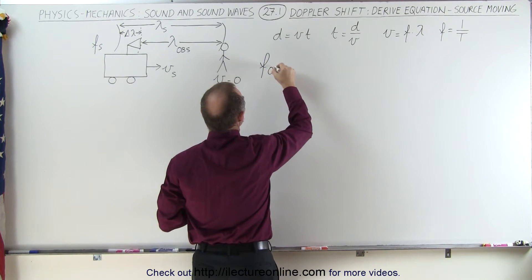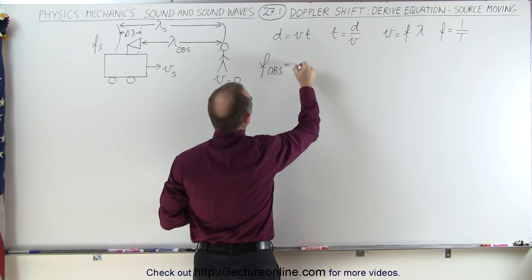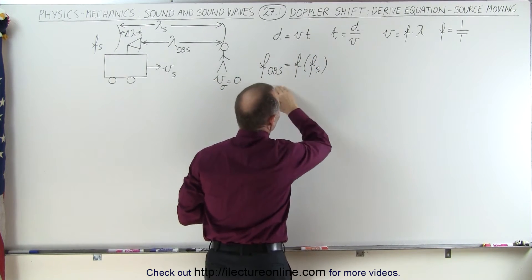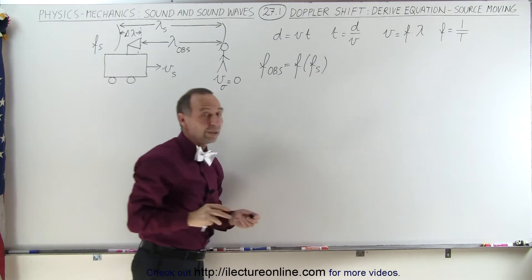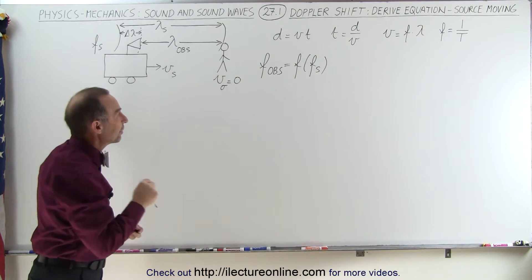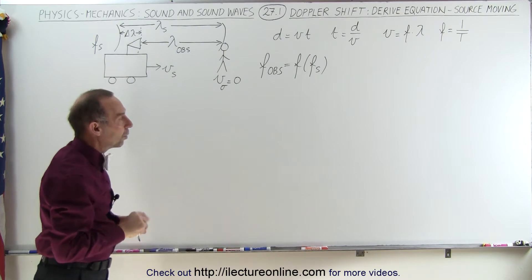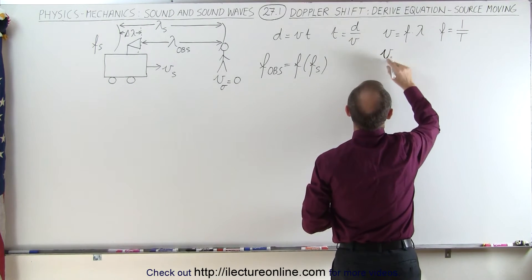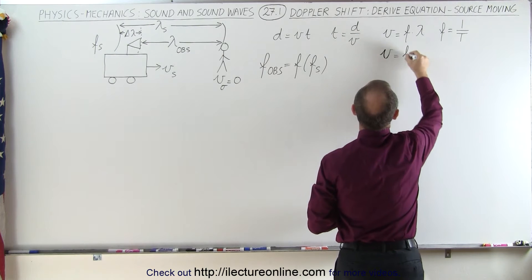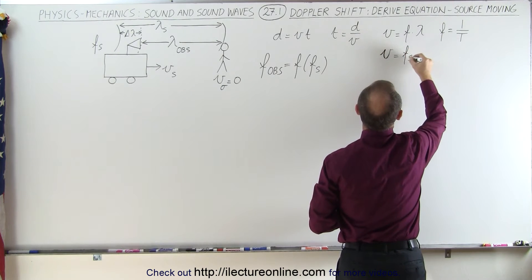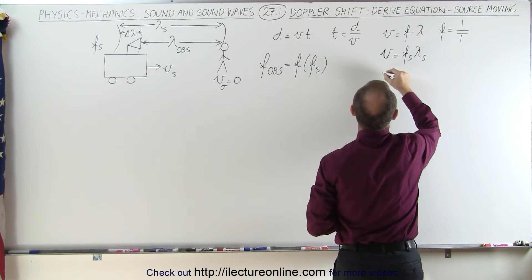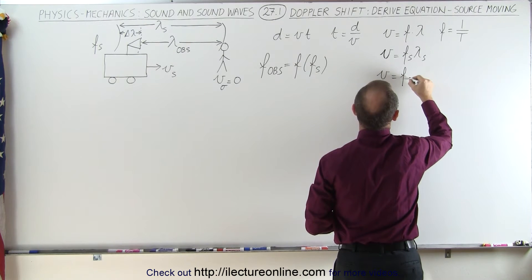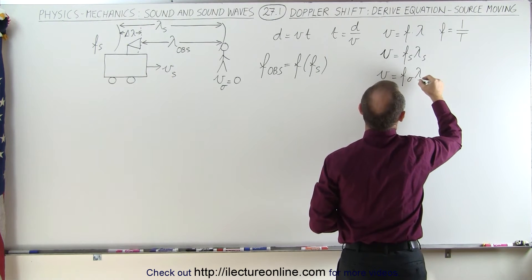The frequency observed by the observer is equal to some function of the frequency of the source, so we have to find the relationship between them. The velocity of sound in air equals the frequency of the source times the wavelength of the source, or equivalently, the velocity of sound in air equals the frequency observed times the wavelength observed.